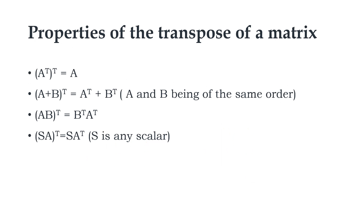Properties of the transpose of a matrix: If we take the transpose of A transpose, the resultant matrix will be A. Also, if we add two matrices and take the transpose, it will be equal to the transpose of the individual matrices, provided they are of the same order. Also, (AB) transpose is equal to B transpose multiplied by A transpose, A and B being conformable for the product AB. This is also called the reversal law.